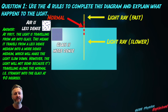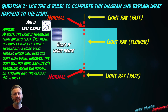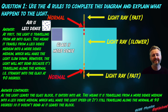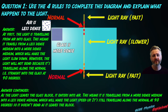Answer: at first, the light is traveling from air into glass. This means it travels from a less dense medium into a more dense medium, which makes the light slow down. However, the light will not bend because it's traveling along the normal, i.e. straight into the glass at 90 degrees. As the light leaves the glass block, it enters into air. This means it's traveling from a more dense medium into a less dense medium, which will make the light speed up. It's still traveling along the normal at 90 degrees and so it doesn't bend as it leaves the block.